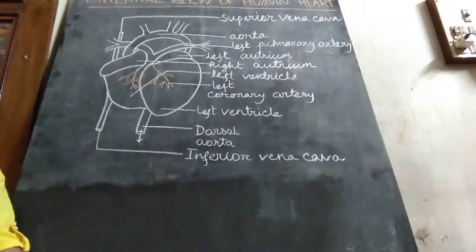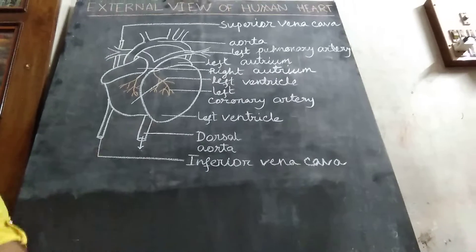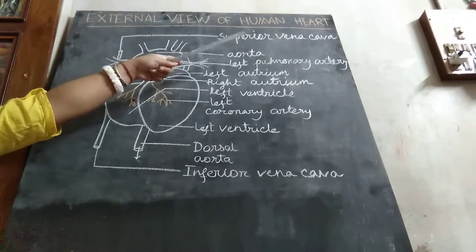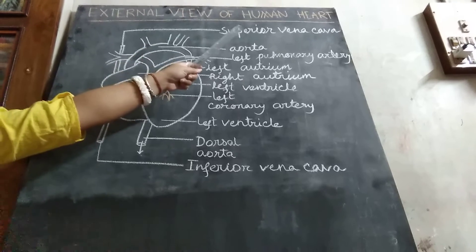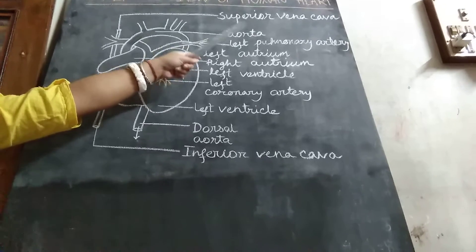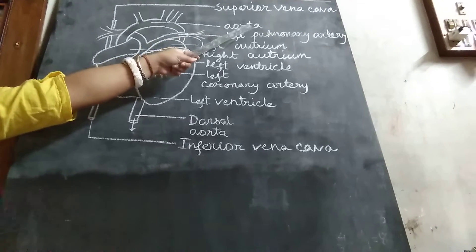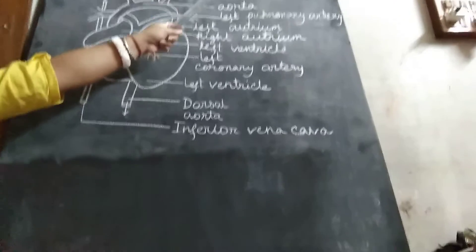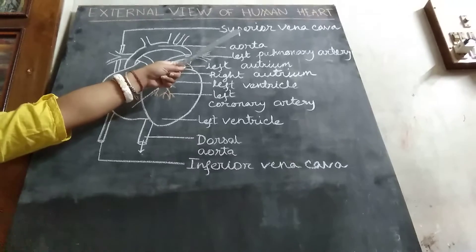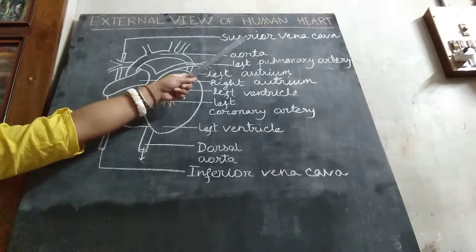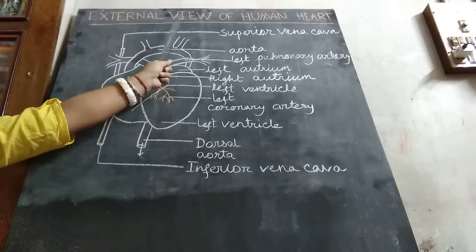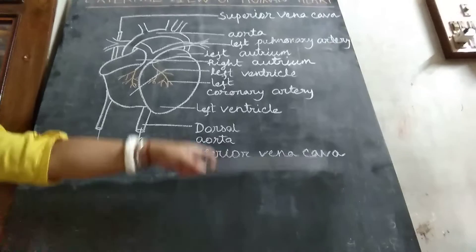The topic I'll discuss with you is the external view of the human heart. The heart is a pumping organ — a hollow muscular organ that goes into systole and diastole, meaning continuous contraction and relaxation, to spread blood to the different organs.